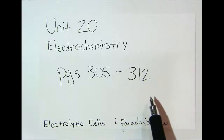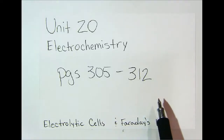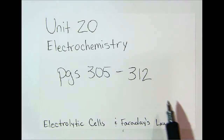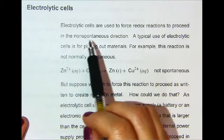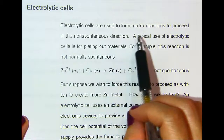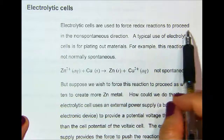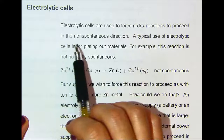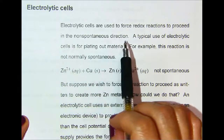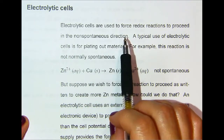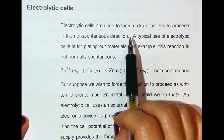Pages 305 to 312, the last video: electrolytic cells and Faraday's Law. Electrolytic cells are used to force redox reactions to proceed in the non-spontaneous direction — so when you have an EMF, that's a negative value.